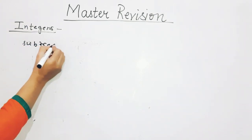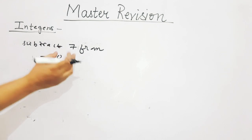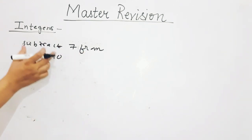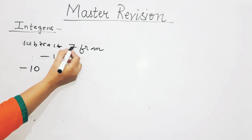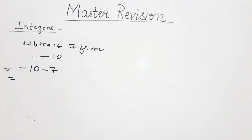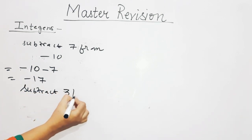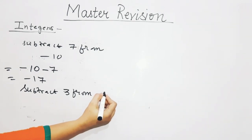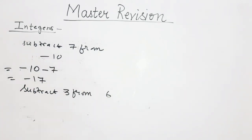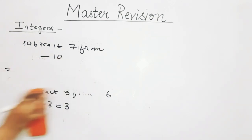Subtract 7 from minus 10. Note that the number written after 'from' is written first — so from minus 10, you subtract 7: minus 10 minus 7. The answer is minus 17. One more question: subtract 3 from 6 — so 6 minus 3 equals 3.